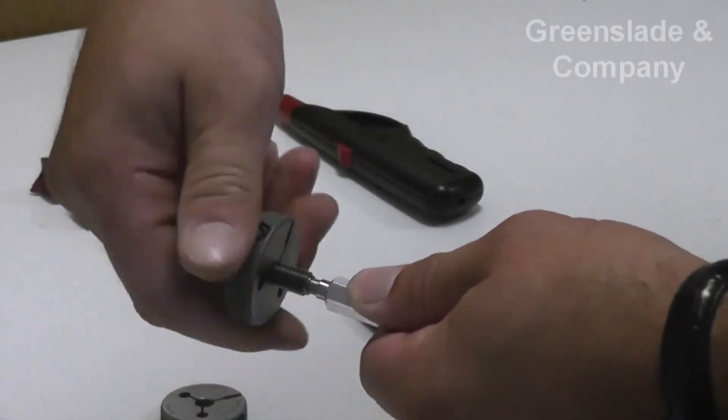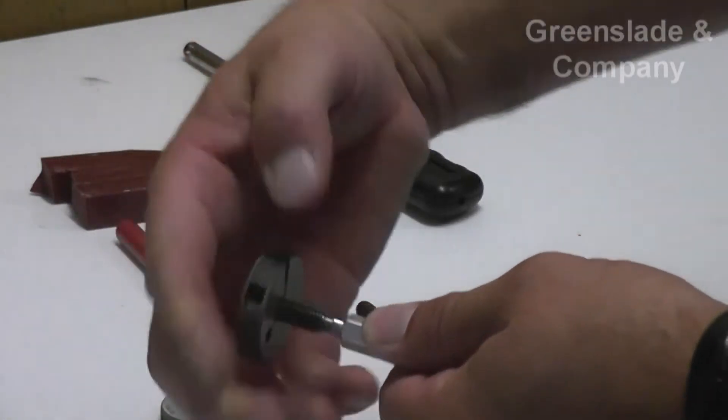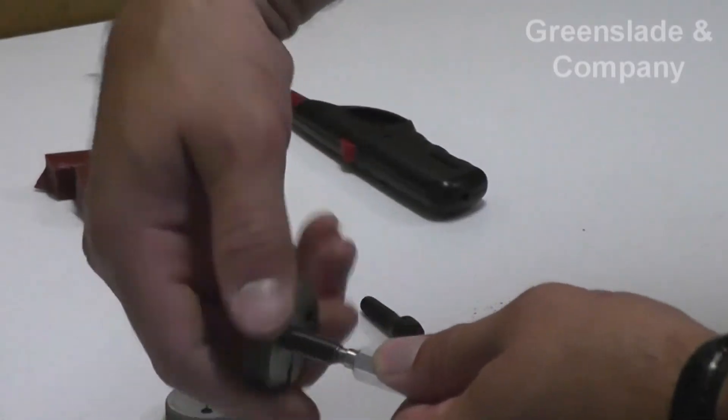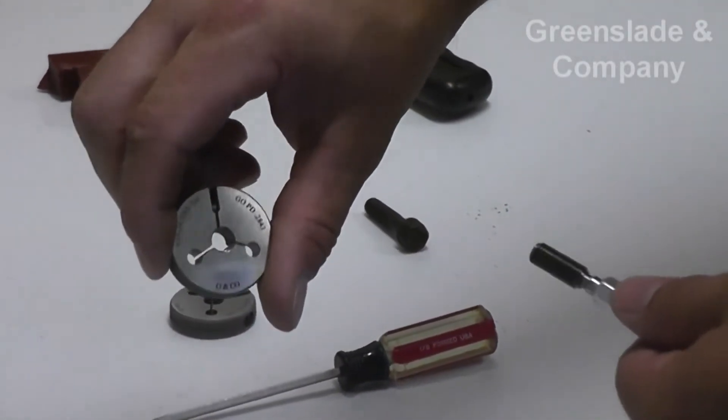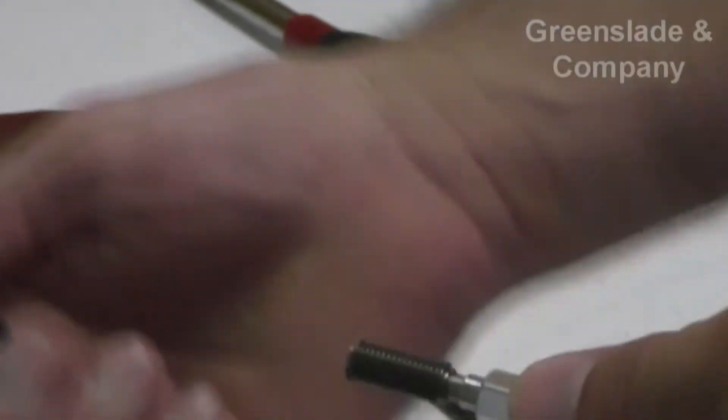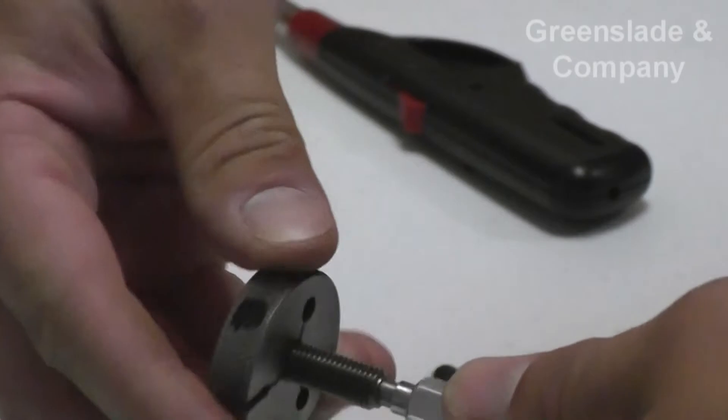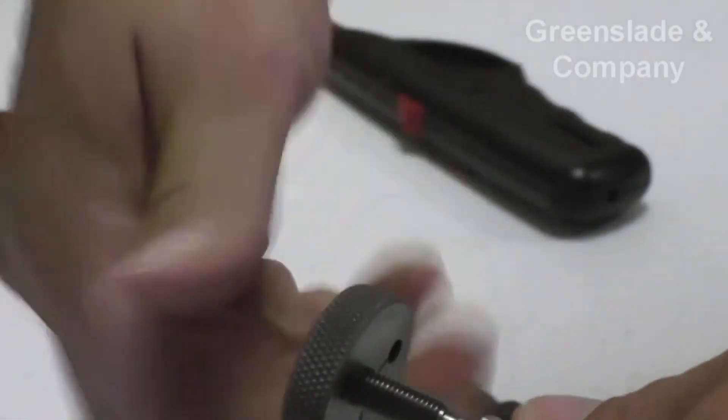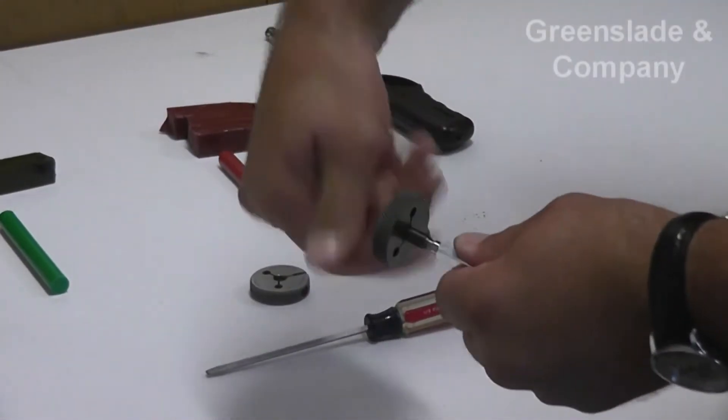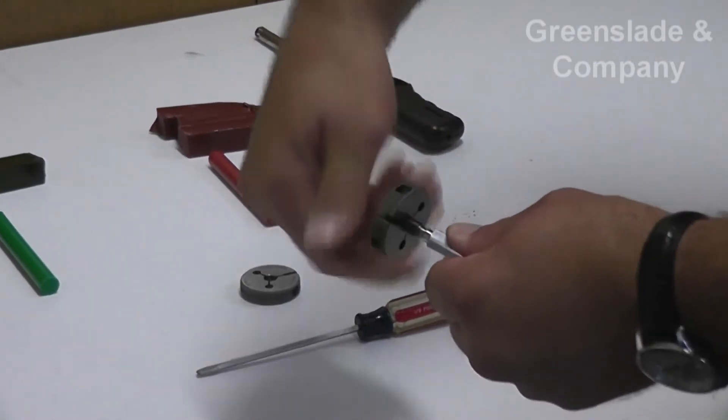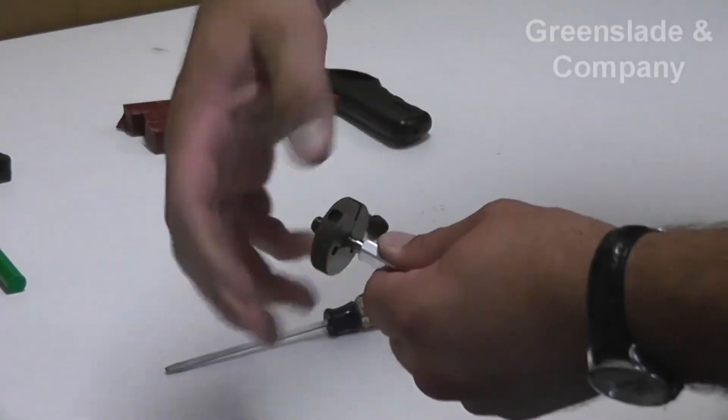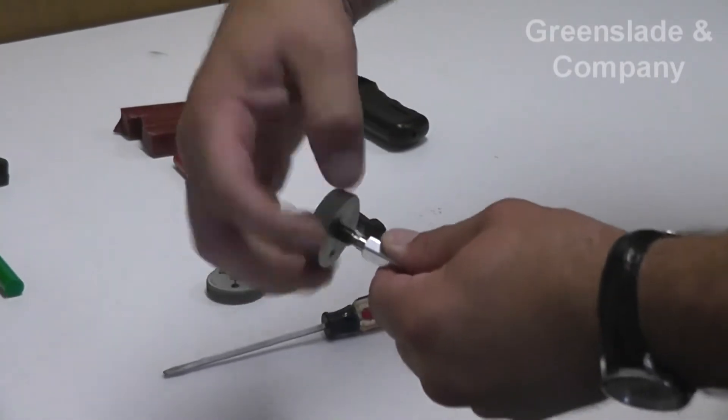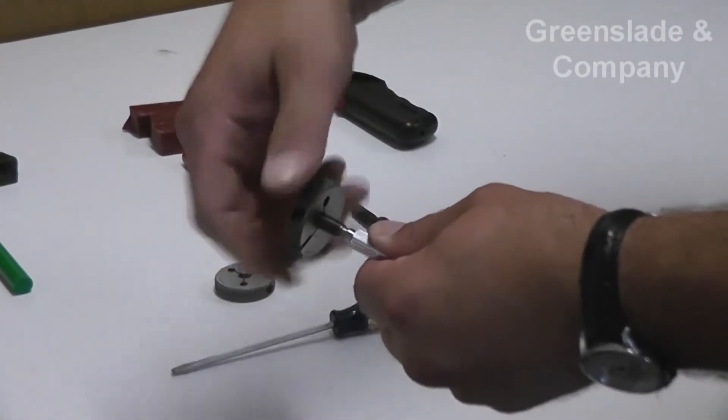Because a lot of people like to use their ring gauges label side in, we just evaluated it one way. You want to flip it around and double check to make sure you have the same type of drag all the way up the set plug. If that's good, then you have a good ring gauge.